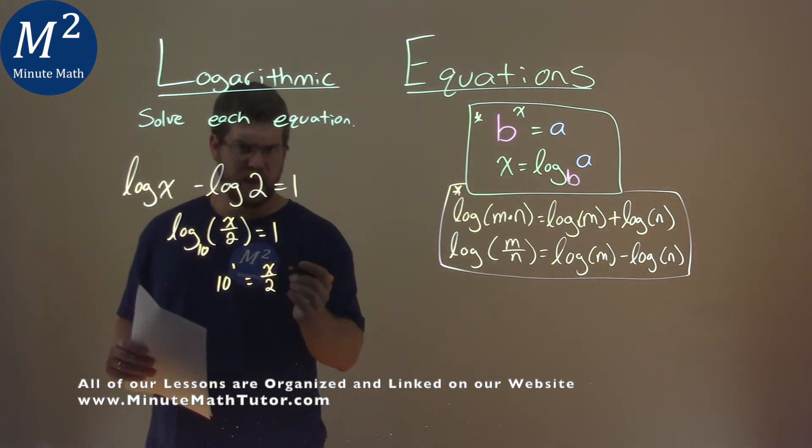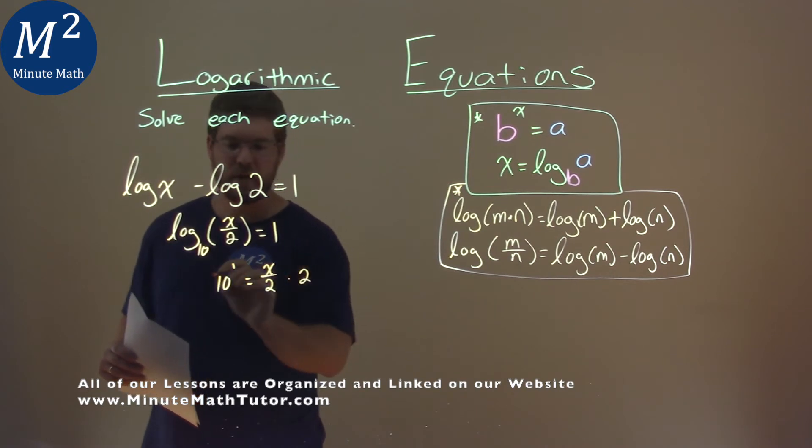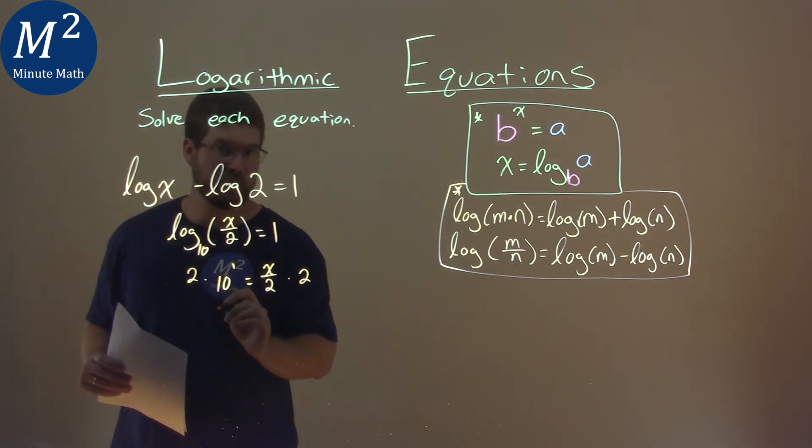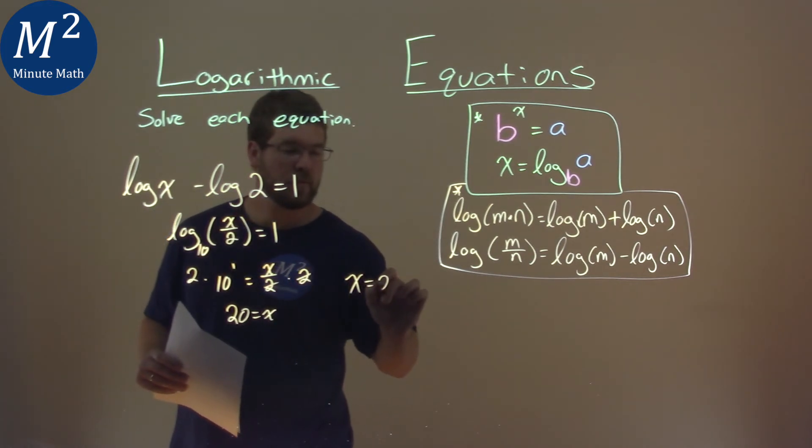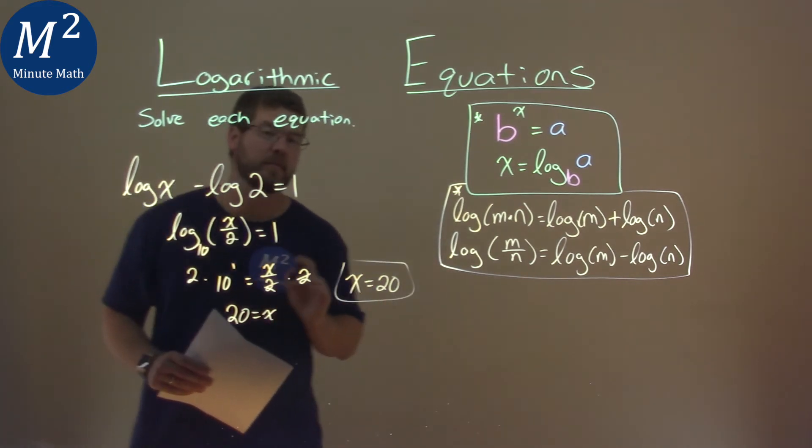Well, 10 to the first power is 10. We multiply both sides by 2, and 10 times 2 is 20. And that's just equal to our x. And so x equals 20 is my final answer.